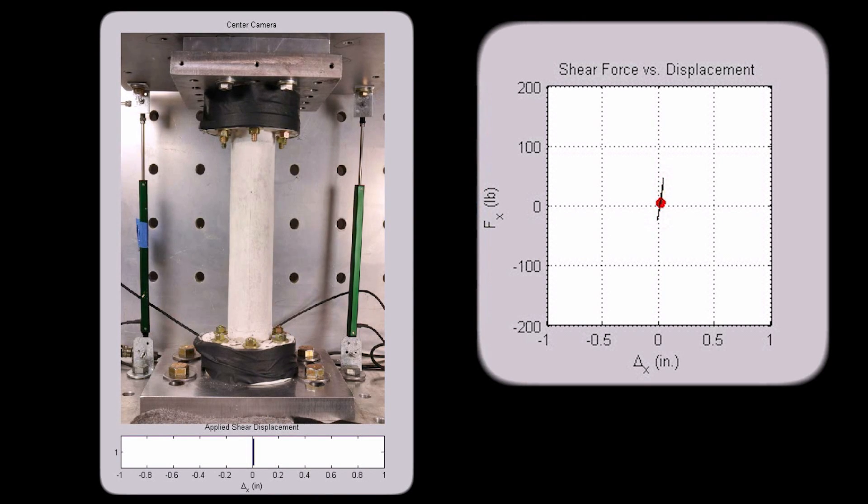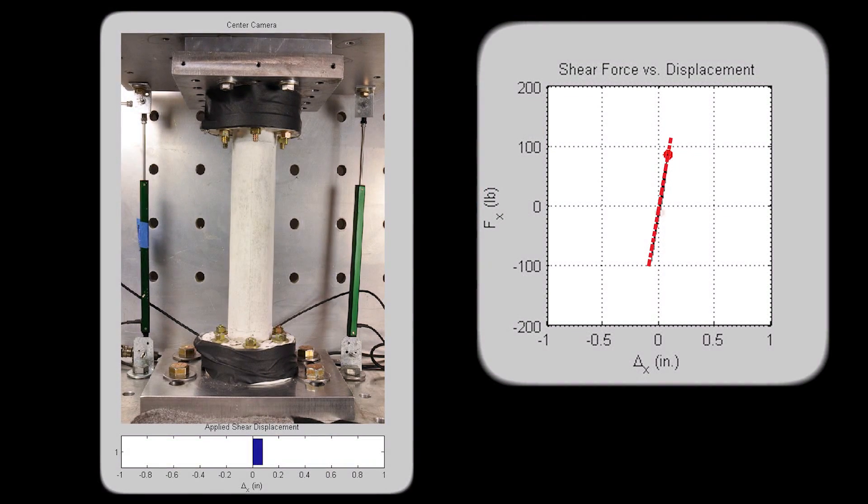As can be seen in the top right plot, the response increases linearly at first, indicating no permanent damage to the pier.